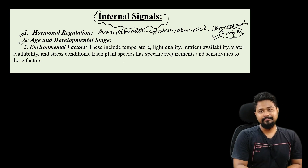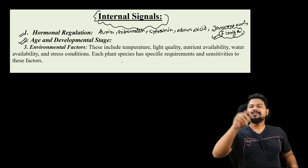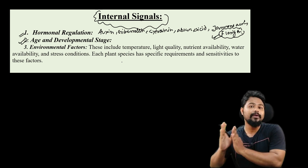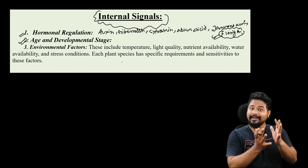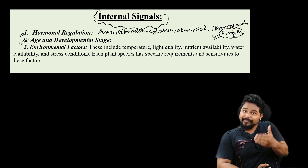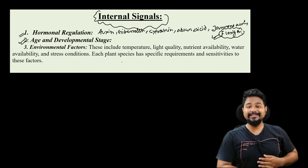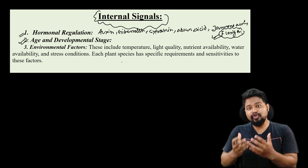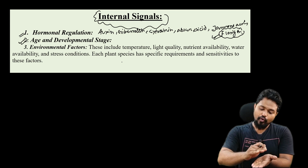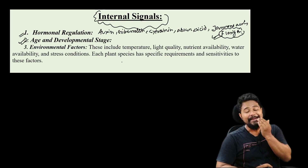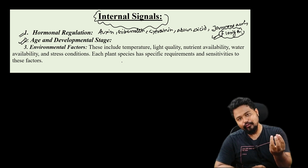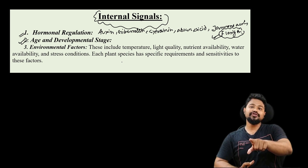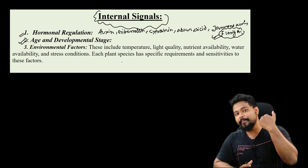Age and developmental stage are also important internal factors. Just as in humans and animals, reproduction doesn't begin at a very young age — there is a certain age or developmental stage that must be reached first. Similarly, a plant must attain a certain age and developmental stage before it can flower. The plant needs to grow to that point, protect itself, and build enough energy before it initiates flowering.